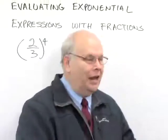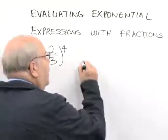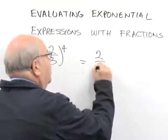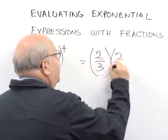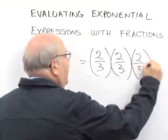Let's see how we would actually do this calculation. Two-thirds to the fourth power means we're multiplying two-thirds times two-thirds times two-thirds times two-thirds.